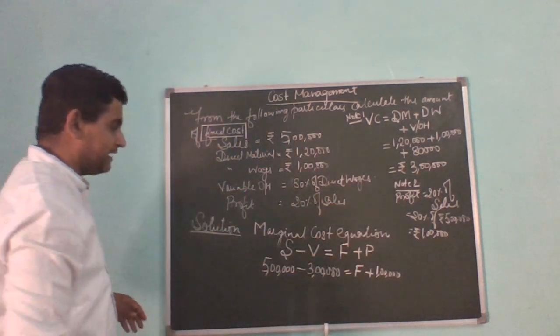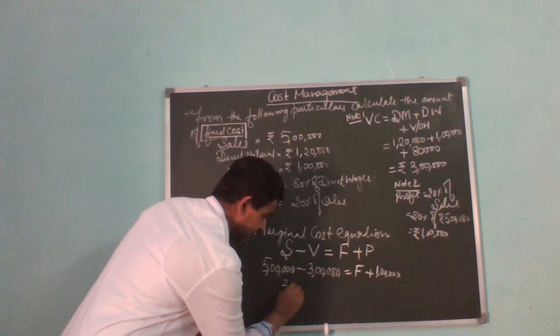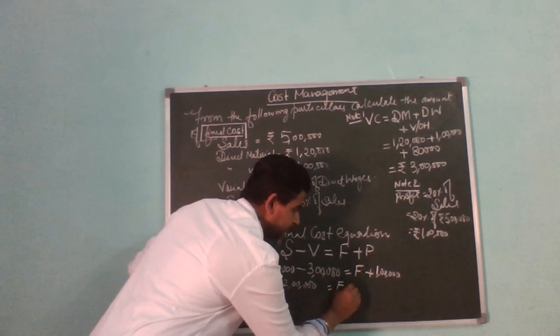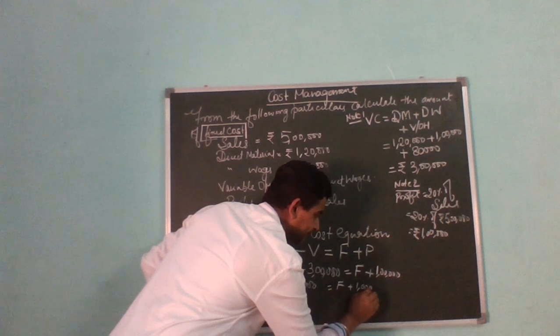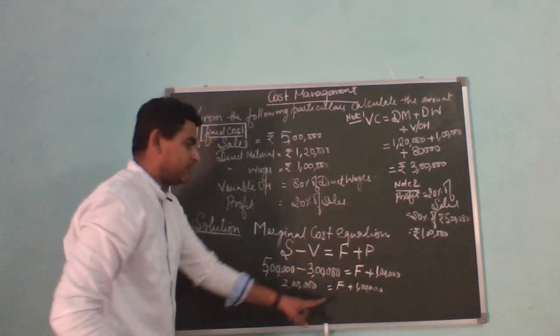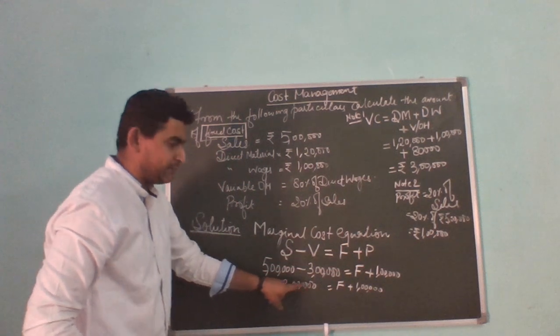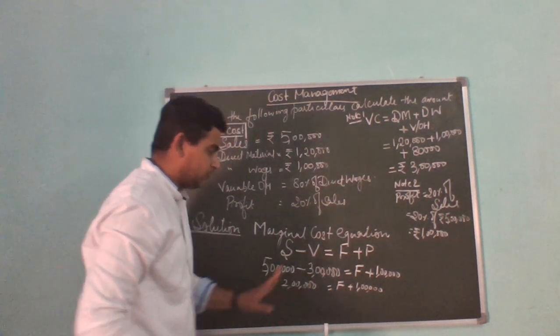5 lakh minus 3 lakh equals 2 lakh, which equals fixed cost plus 1 lakh. Therefore, fixed cost is 2 lakh minus 1 lakh, which equals 1 lakh.